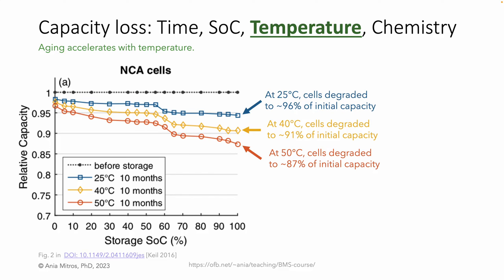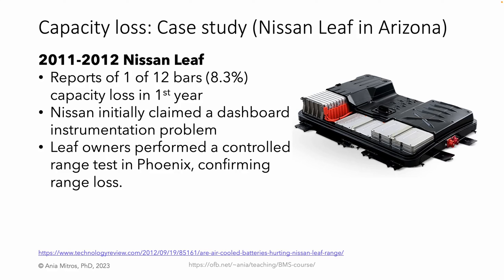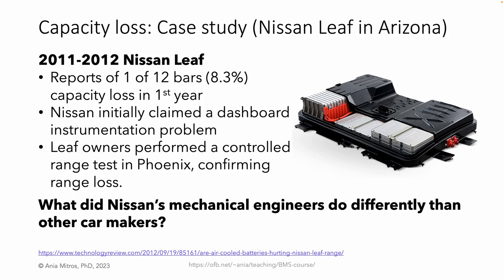As a side note, the cells used in this study are not as good as those in my Tesla — my car suffers far less than 4% per year capacity loss. Let's look at a real-world example. Shortly after the Nissan LEAF came out, some owners in Arizona started reporting unexpectedly large capacity loss — loss of one of the 12 bars of range within the first year. Nissan initially claimed this was a dashboard instrumentation problem, but a group of LEAF owners performed controlled range tests confirming actual range loss. Take a moment to think about what's special about Phoenix, Arizona, and what mechanical engineering decision could explain the unusually large capacity loss.